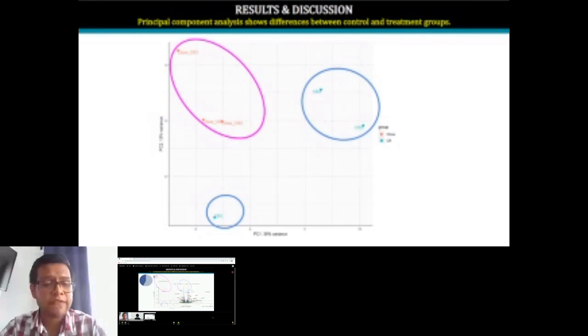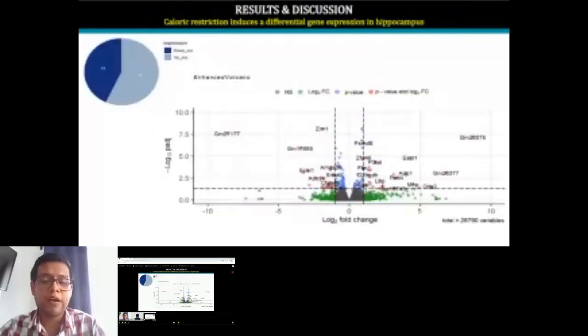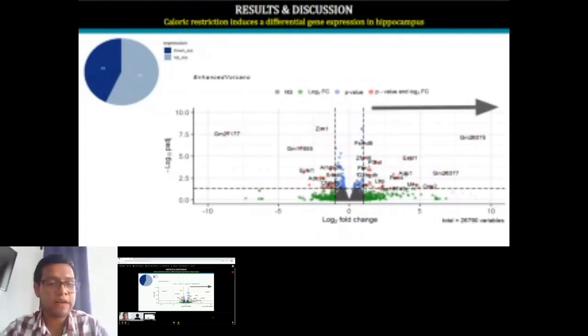After proving that there is a differential cluster between these conditions, we analyzed the rate of change of the genes and their significance. We can see it with this volcano plot. We observe that much of the changes are related to the over-expressed genes. There are 29 genes that are over-expressing.